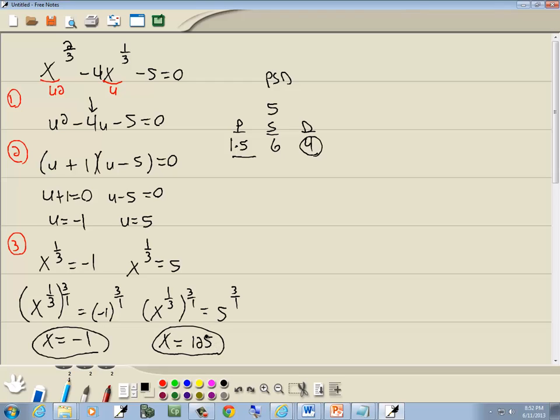Now this is assuming this works in our original problem. Let me plug negative 1 in here and see. Negative 1 to the 1 third power is negative 1 squared is 1. If I put it in here, that gives me a negative, so that's a positive 4. 1 plus 4 is 5. 5 minus 5 is 0. So that checks.